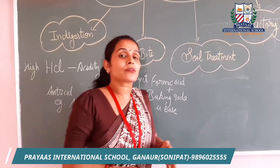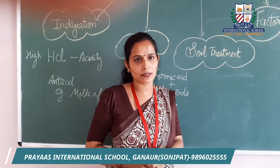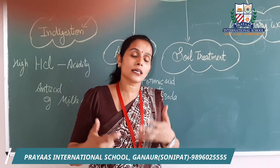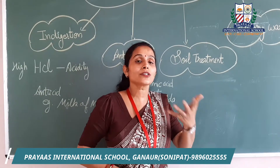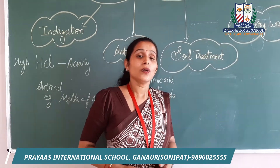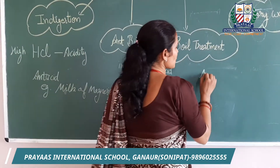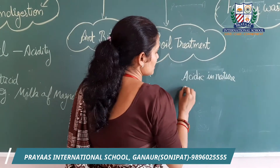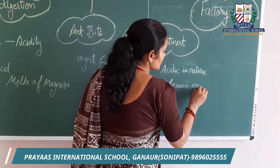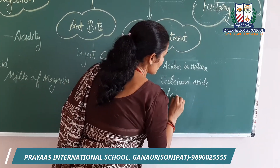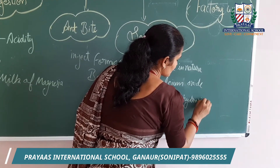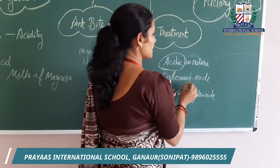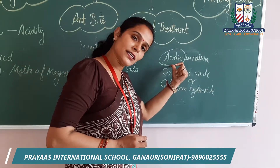Third application is soil treatment. Plants grow best in neutral soil. But sometimes excessive use of fertilizers makes the soil acidic, which affects plant growth and yield. To neutralize acidic soil, we add calcium oxide (CaO) or calcium hydroxide Ca(OH)₂, which neutralizes the acidic nature of the soil.